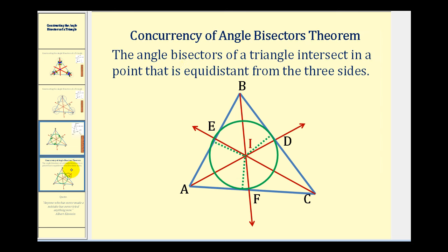We'll finish by stating the Concurrency of Angle Bisectors Theorem. This theorem tells us that the angle bisectors of a triangle intersect in a point that is equidistant from the three sides, as we just demonstrated. I hope you found this helpful.